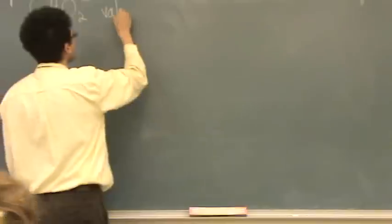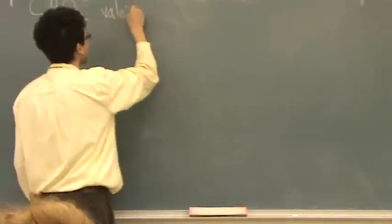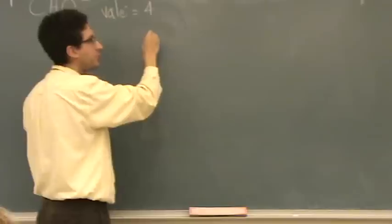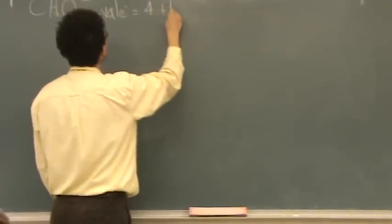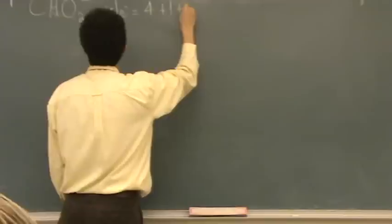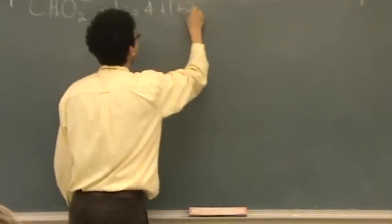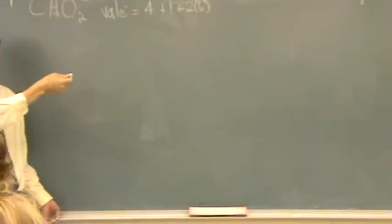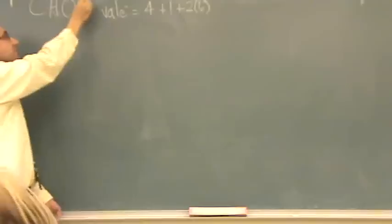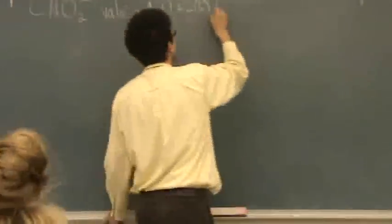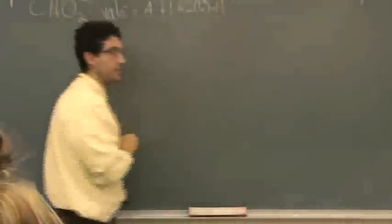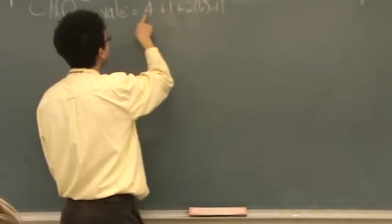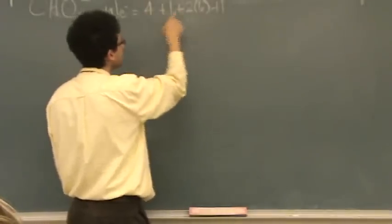If you want to do the Lewis structure, first step: valence electrons — calculate that out. Carbon is in column four. Hydrogen is in column one. And oxygen, there are two of them, in column six. And this minus charge means there's one more electron — you just have to add in that minus charge. So that gives us 4 + 2 + 12 + 1 = 18 total valence electrons.